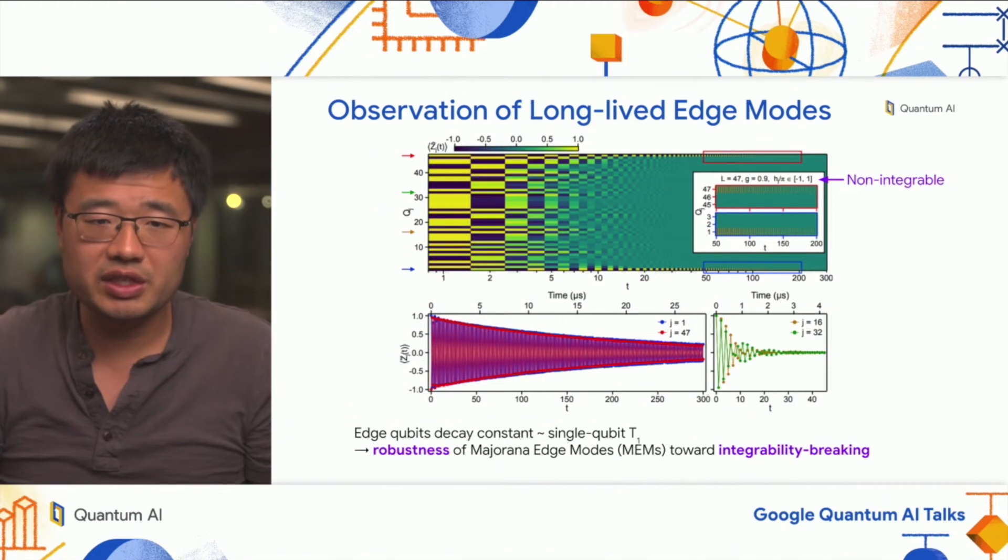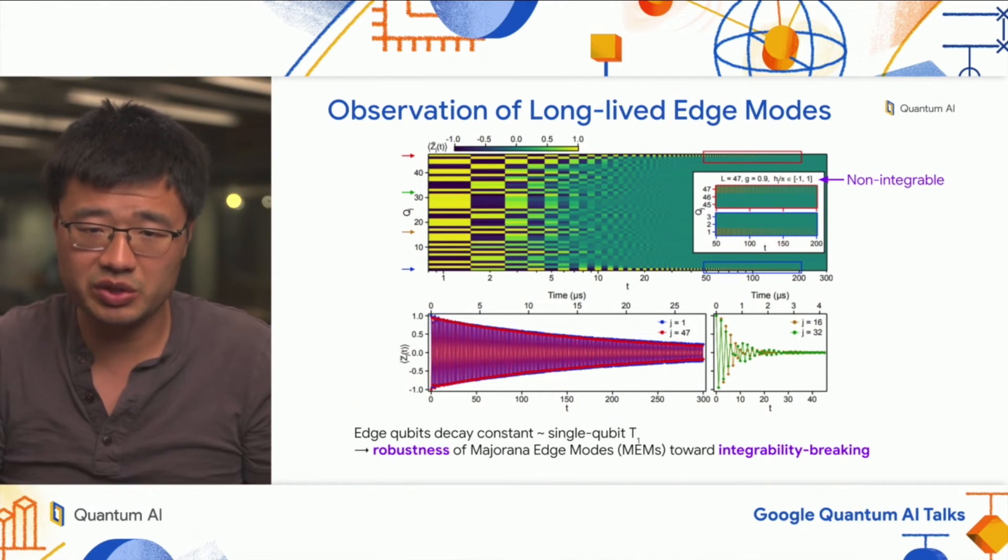You immediately see something quite striking. The top plot is a 2D map of local polarization Z as a function of space (vertical axis) and time (horizontal axis). You see qubits in the middle decay after 10 or 20 cycles. Everything goes green, meaning zero. Whereas on the edges, you see this up-down sub-harmonic response, which lives for a very long time, up to 300 cycles. The two plots at the bottom are selective cuts through this data where you really see the contrast between the qubits on the edge and qubits within the bulk.